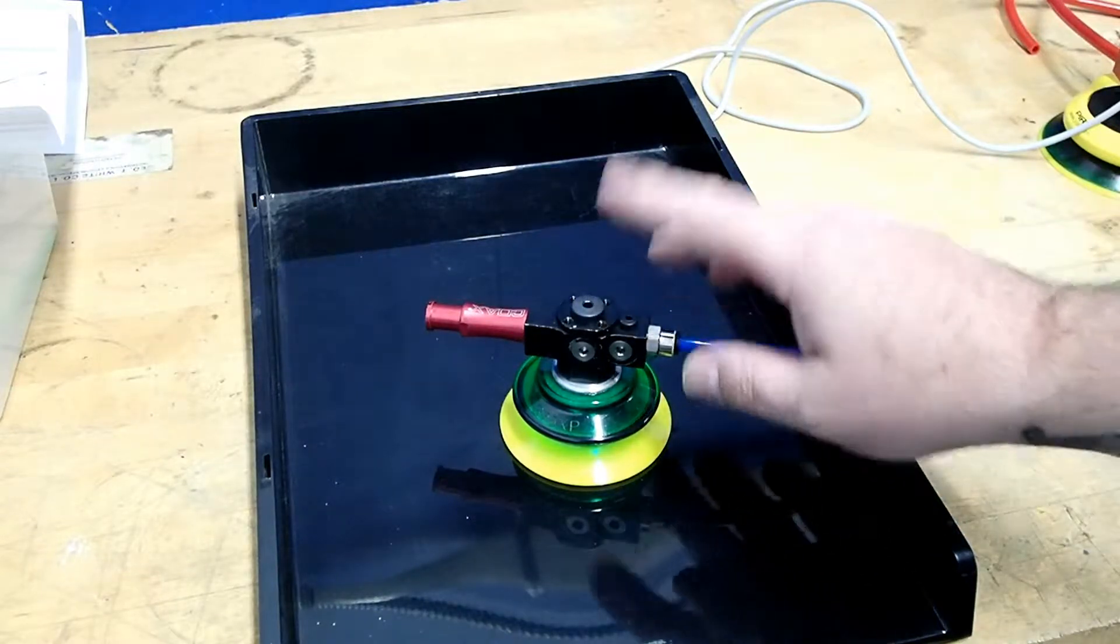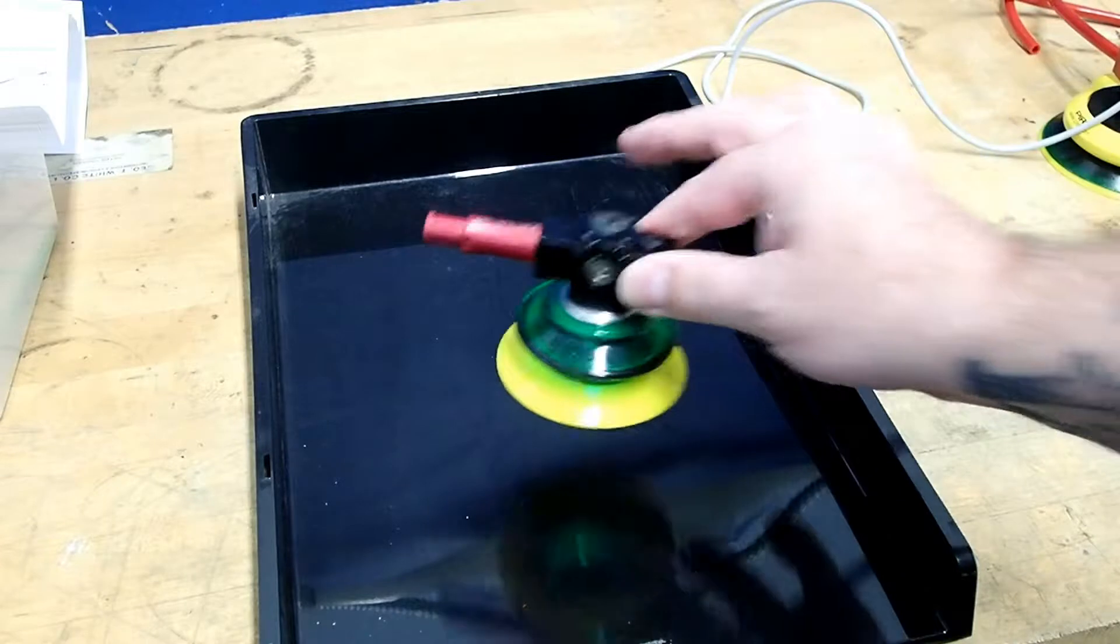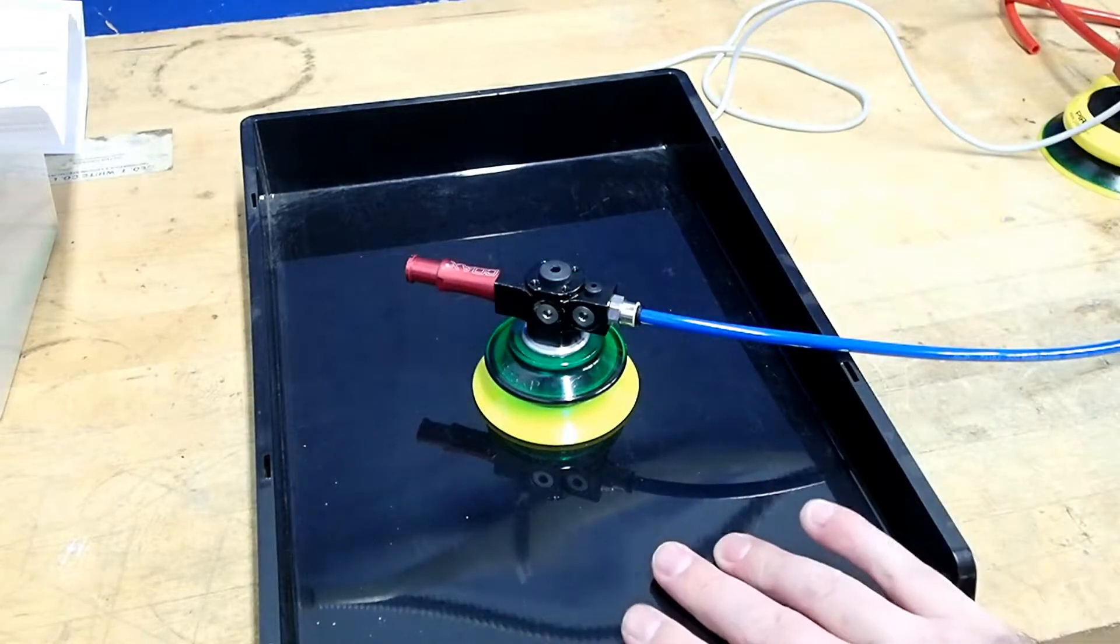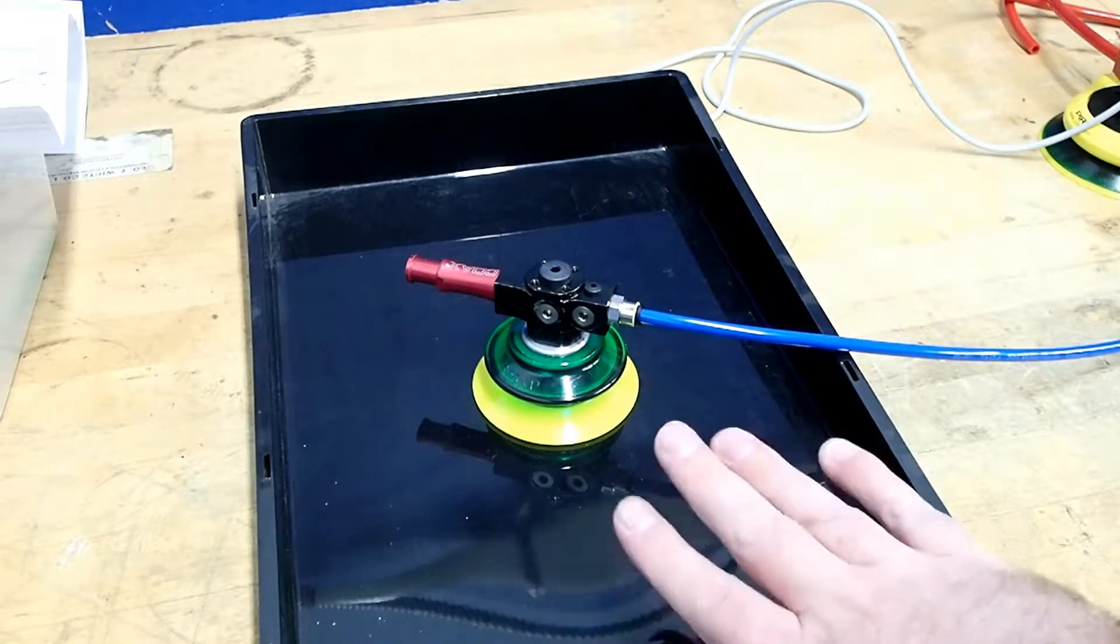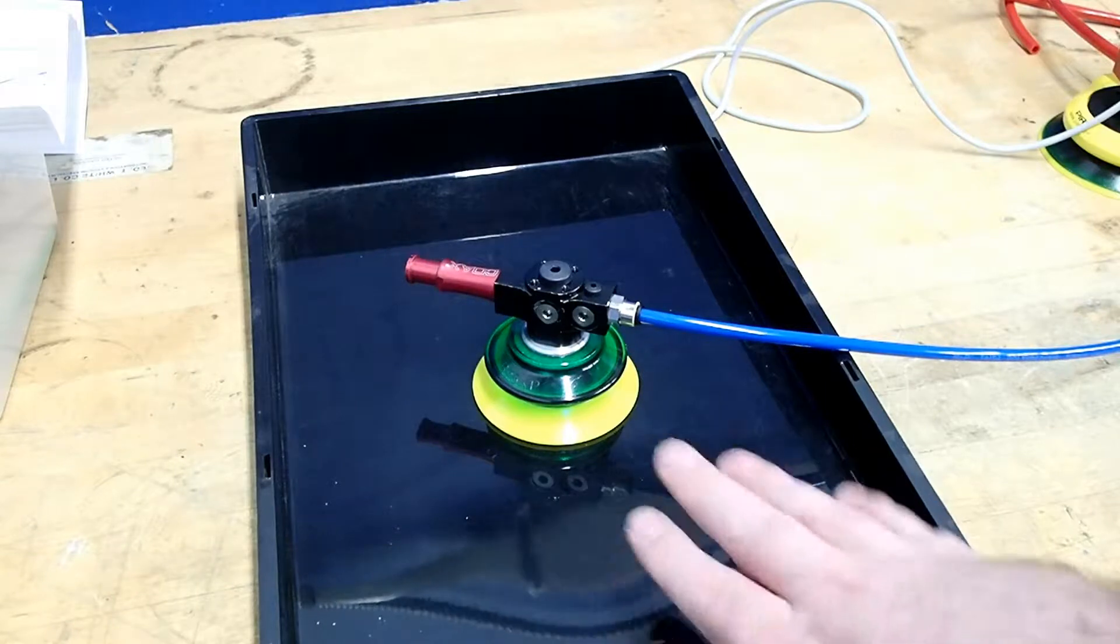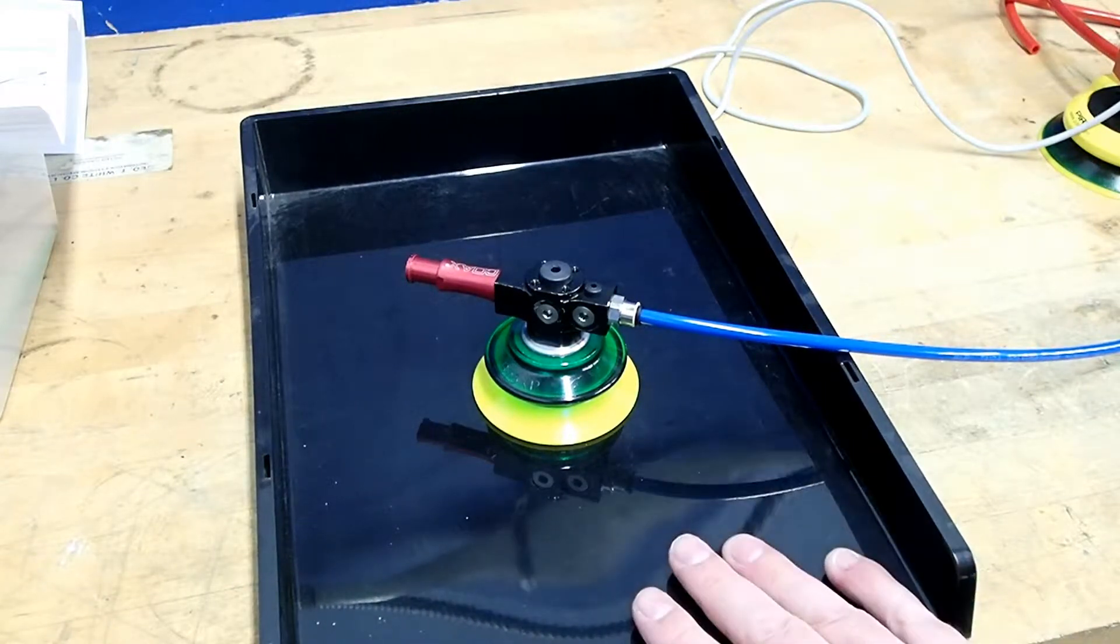So what we have right now is just a typical ejector and cup setup and we're going to be using this plastic tray to define our airtight surface, be it glass, plastic, or sheet metal.